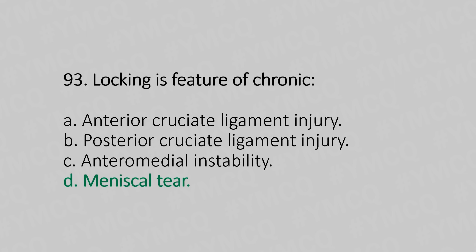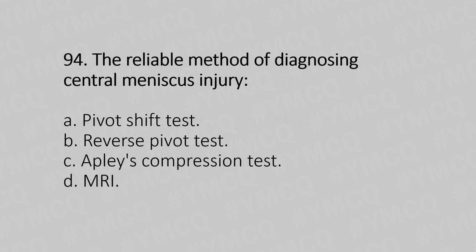Let's move to question number 94. The reliable method of diagnosing central meniscus injury: Option A, pivot shift test. Option B, reverse pivot test. Option C, Apley compression test. Option D, MRI. The answer is Option D, MRI.